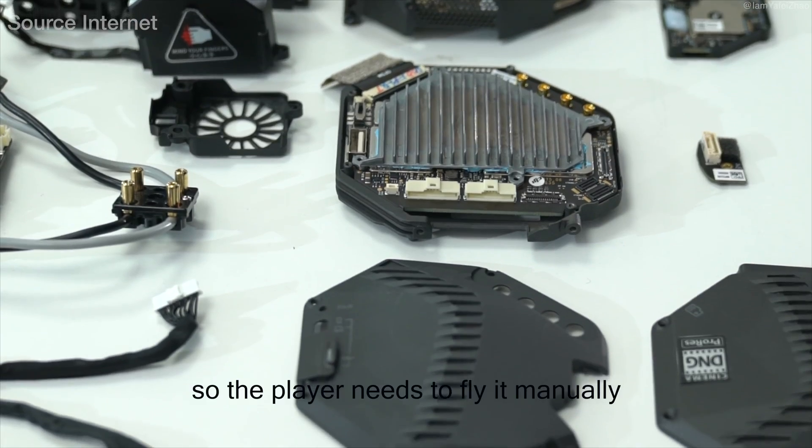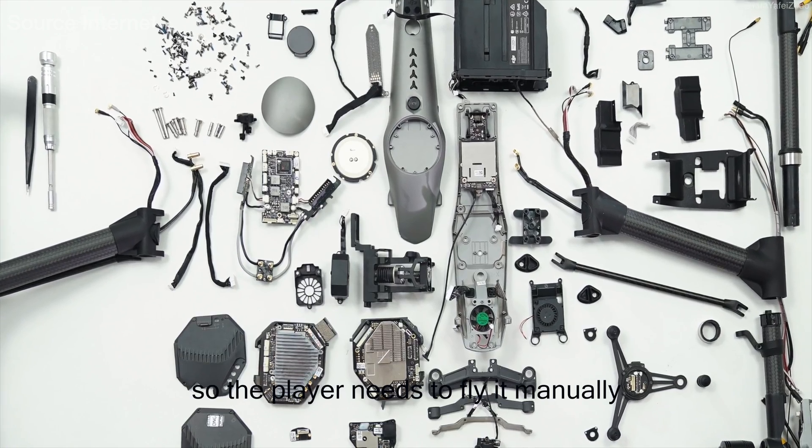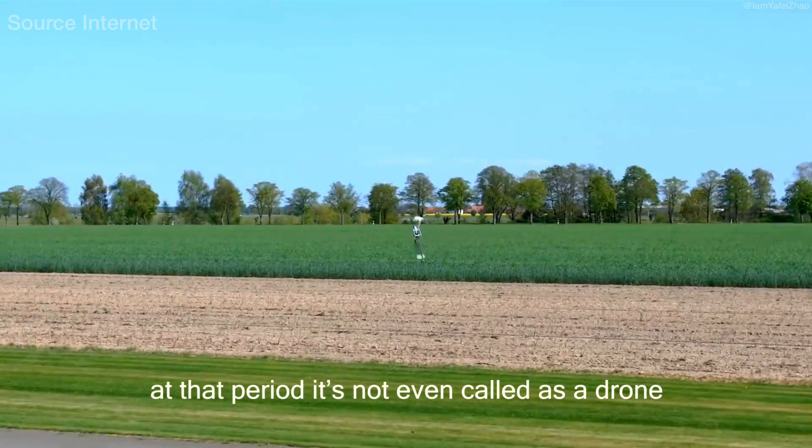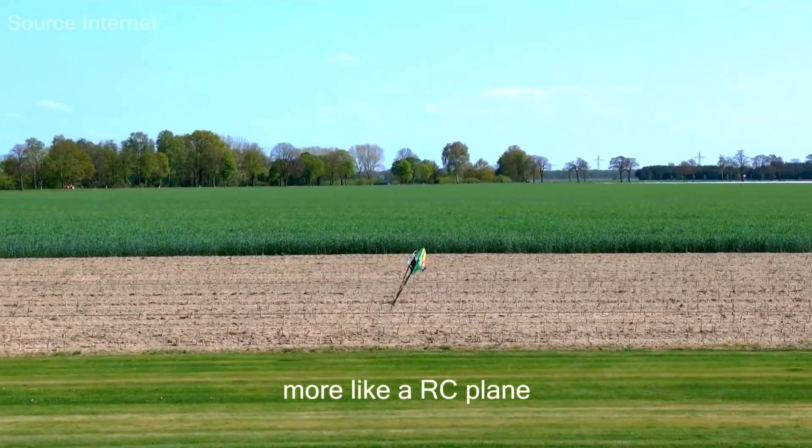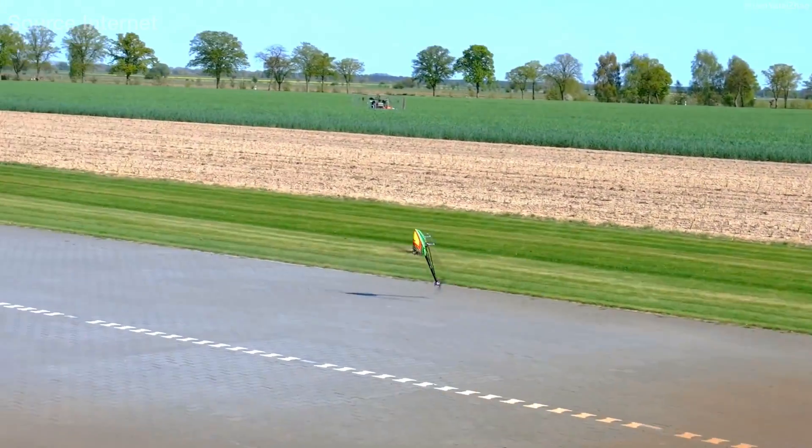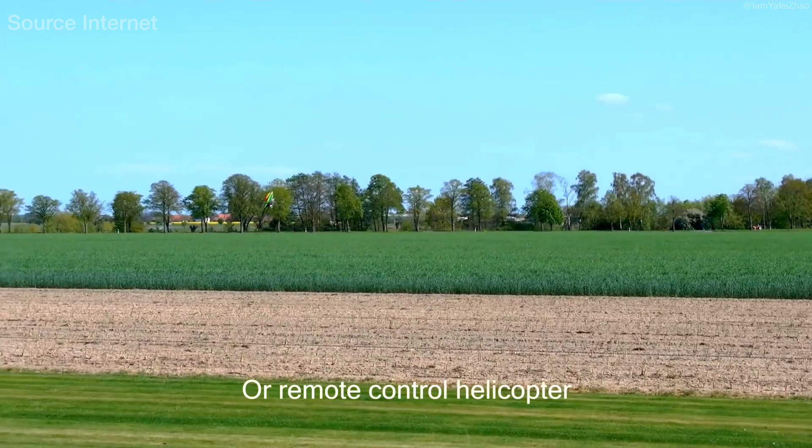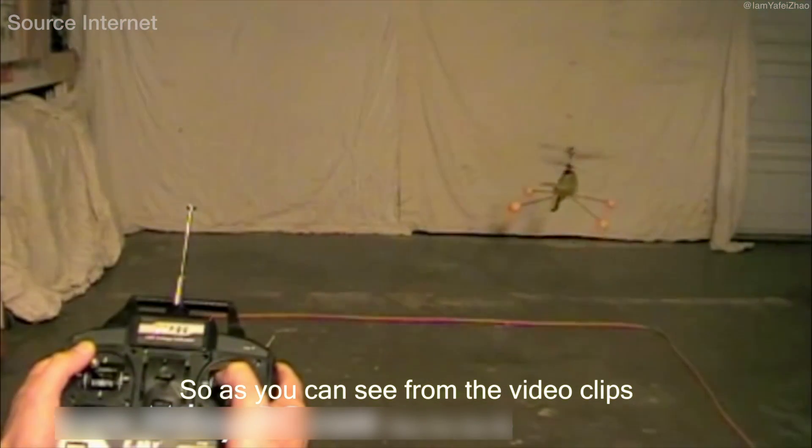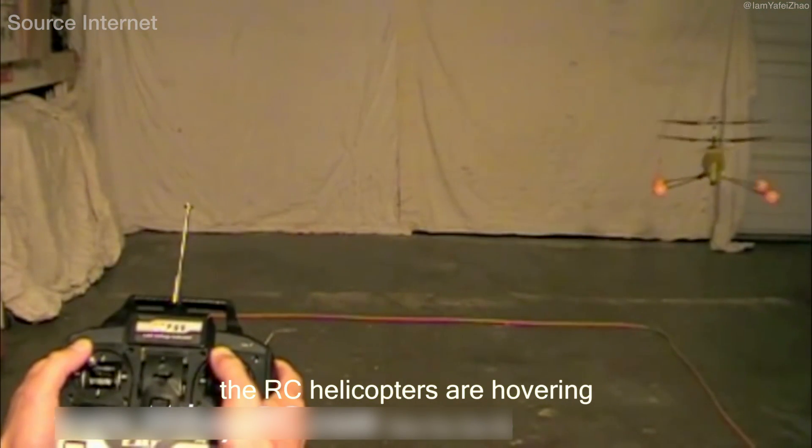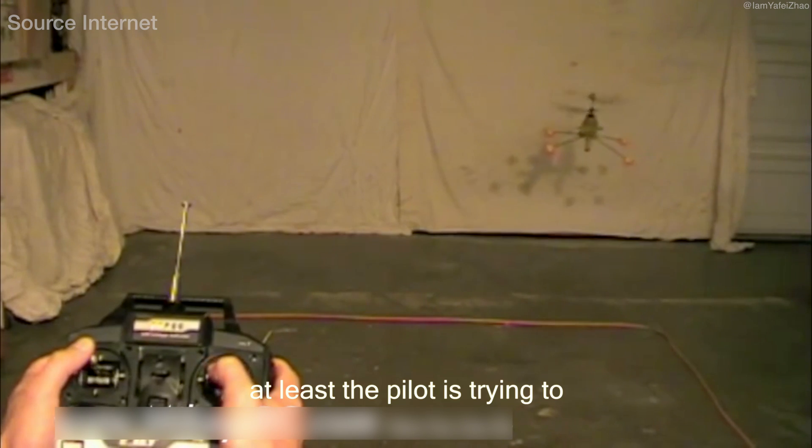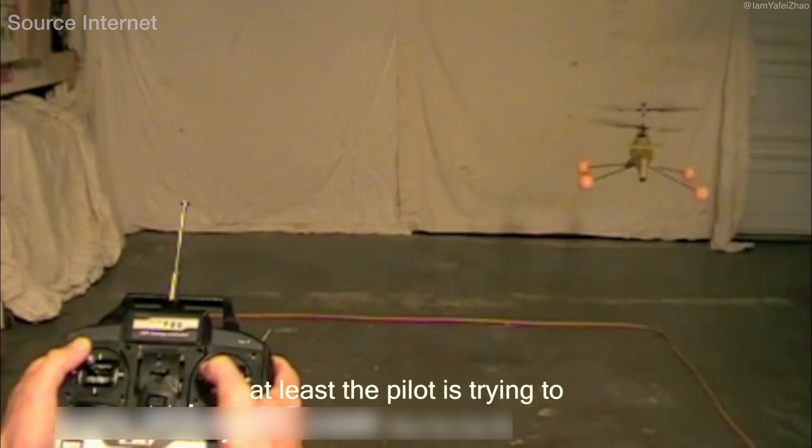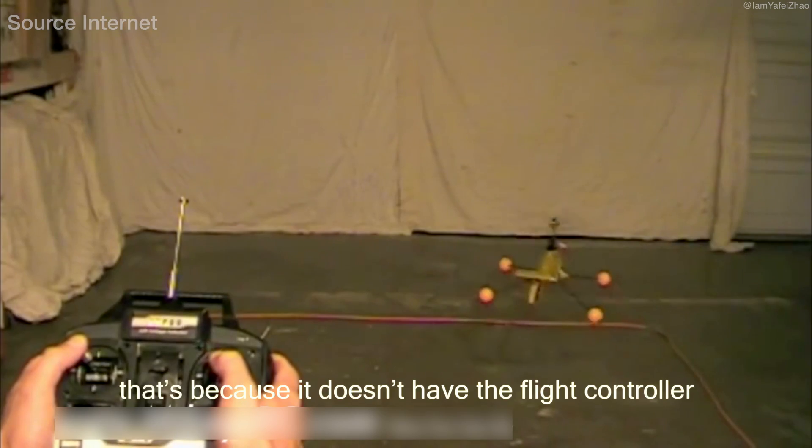It's like the brain to the human, so the player needs to fly it manually. At that period, it wasn't even called a drone, more like an RC plane or remote control helicopter. As you can see from the video clips, the RC helicopters are hovering, at least the pilot is trying to, but it's still not stable. That's because it does not have the flight controller.